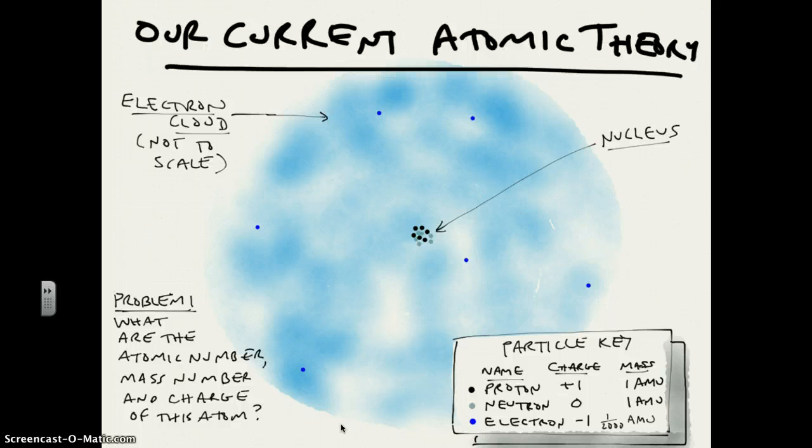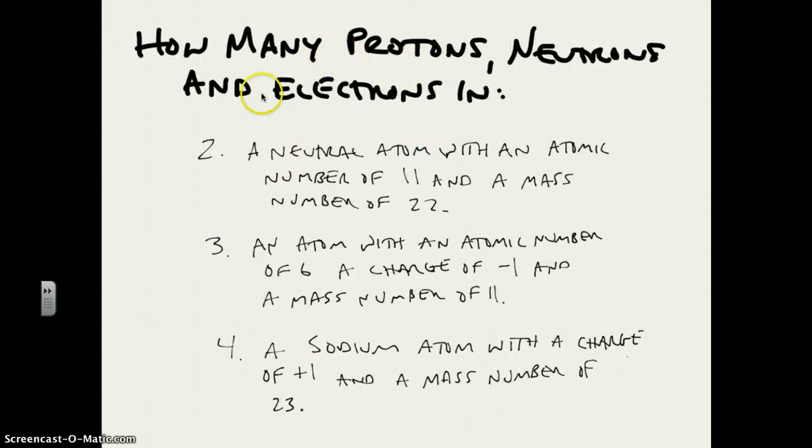Problem number two, there are three problems to do that sort of turn this around a little bit and ask you to say how many protons, neutrons, and electrons are there in a neutral atom with an atomic number of 11, a mass number of 22, an atom with an atomic number of 6, a charge of negative 1, and a mass number of 11, and finally a sodium atom with a charge of plus 1 and a mass number of 23. You're going to need to look at a periodic table for that last one. We'll talk about the answers and do a bunch more problems like this when we get together tomorrow.